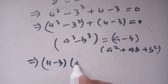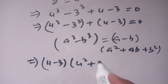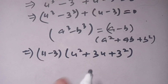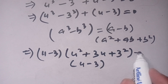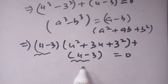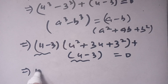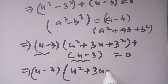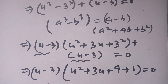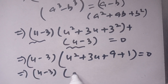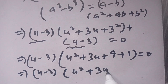We apply the difference of cubes identity: u cubed minus 3 cubed equals u minus 3, times u squared plus 3u plus 9. So the equation becomes u minus 3, times u squared plus 3u plus 9, plus u minus 3, equal to 0. We factor out u minus 3 to get u minus 3, times u squared plus 3u plus 10, equal to 0.